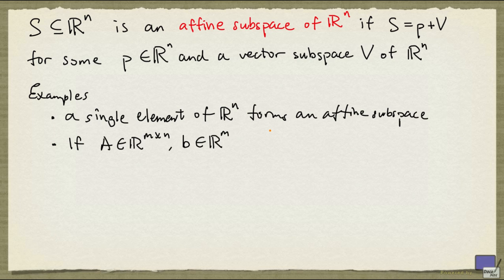If we are given an M by N matrix A and an M-tuple B, where M is a positive integer, then the set of solutions Ax equal to B, provided that this system is consistent, is an affine subspace.